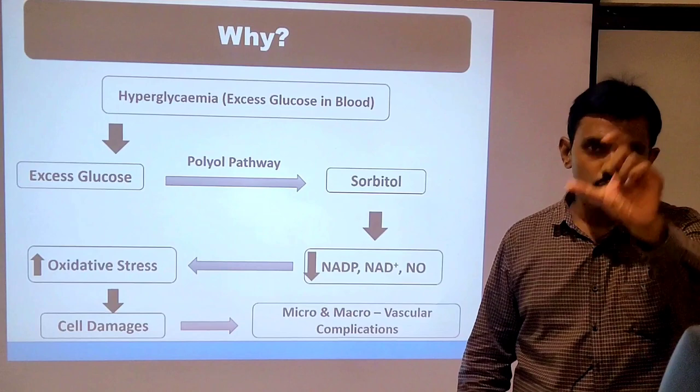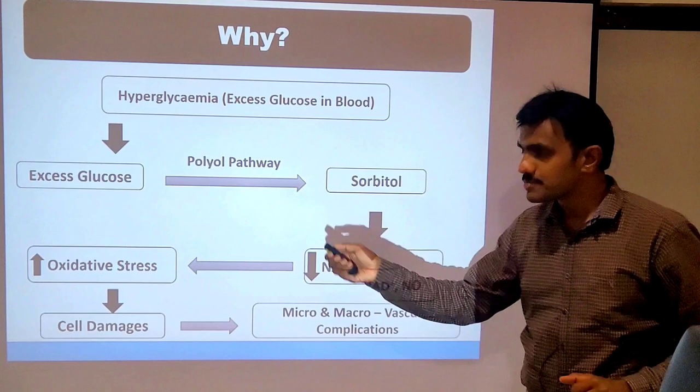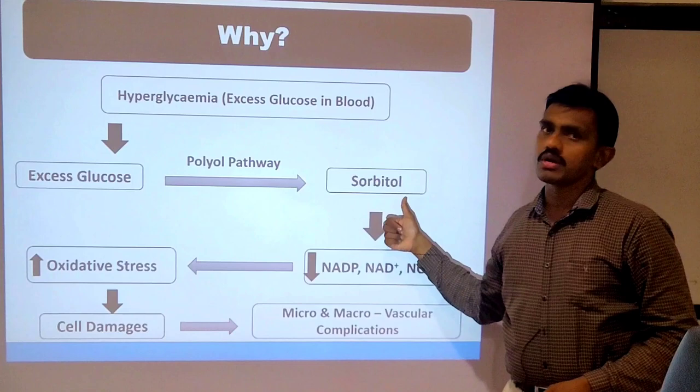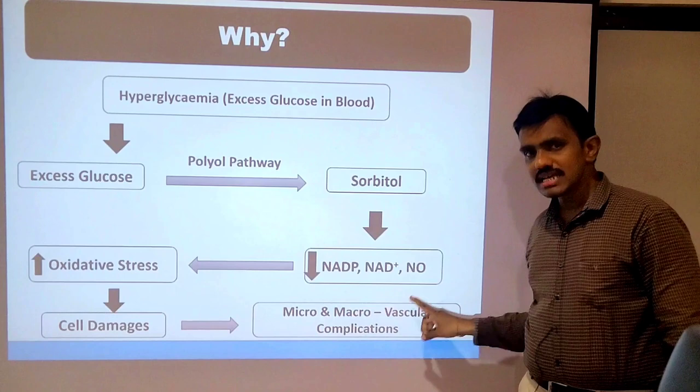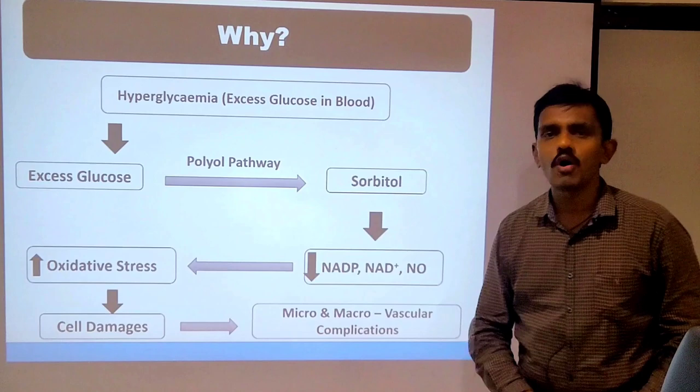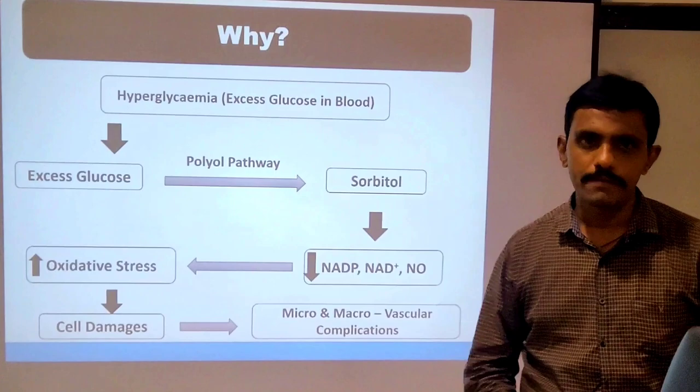This cell damage is mainly responsible for both micro and macrovascular complications. Many people don't know why diabetic complications occur — this polyol pathway is the reason. Excessive glucose is converted to sorbitol; during this process NADPH and NAD+ are reduced, oxidative stress increases, and that leads to the complications.